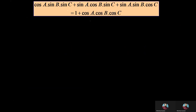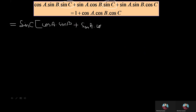Let's start our solution by taking sinC common from the first two parts of the left-hand side. So we can write sinC as common, and there remains cosA·sinB from the first part plus sinA·cosB from the second part. We copy the third part as same, that is sinA·sinB·cosC.